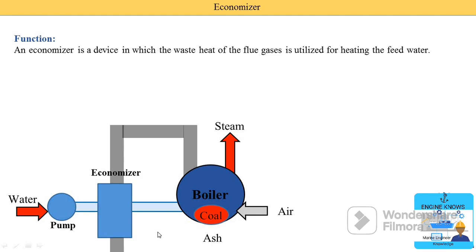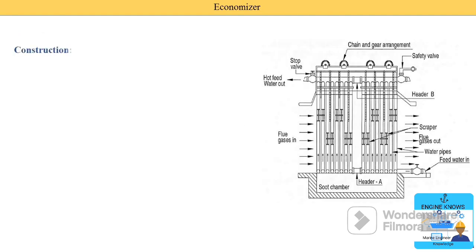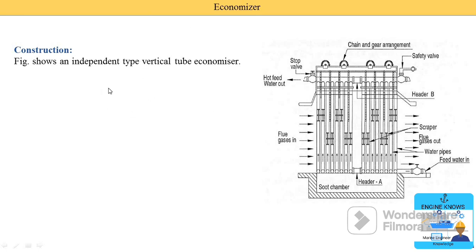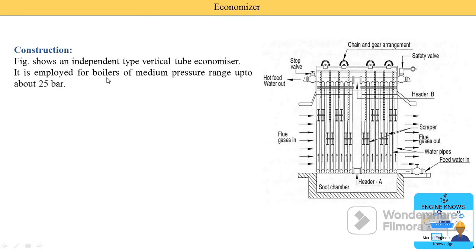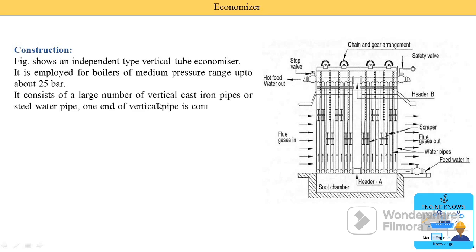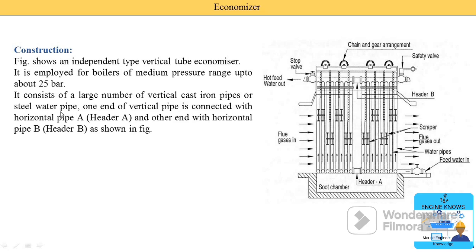Next we move towards the construction. This is the image of the independent type vertical tube economizer. There are a number of vertical tubes. It is employed for a boiler of minimum pressure range up to 25 bar. It consists of a large number of vertical tubes, and the material of these tubes is either cast iron or steel.